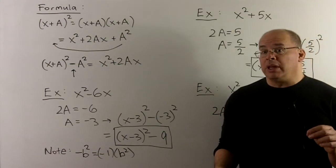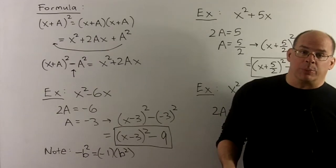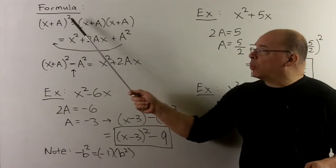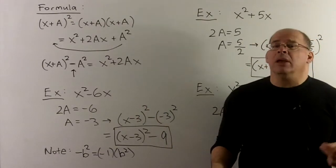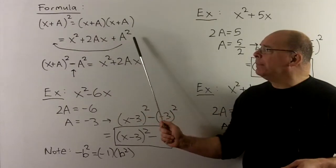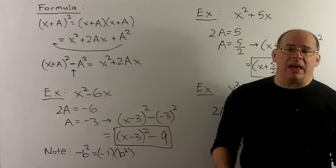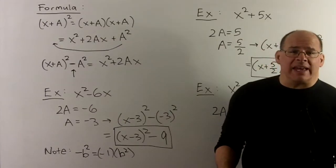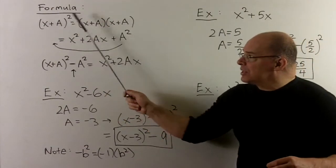Where does this formula come from? We already saw the heart of the argument. Starting with x plus a, quantity squared, written as x plus a times x plus a, we FOIL to get x squared plus 2ax plus a squared. Moving the a squared to the other side gives us our formula. This formula is not so hard to remember if you recall it has something to do with x plus a squared.